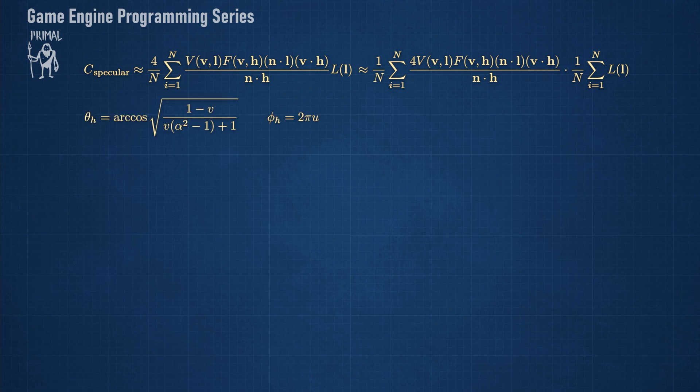However, this time we are using a different mapping from uniform random values. Now the mapping depends on the roughness value of the surface.